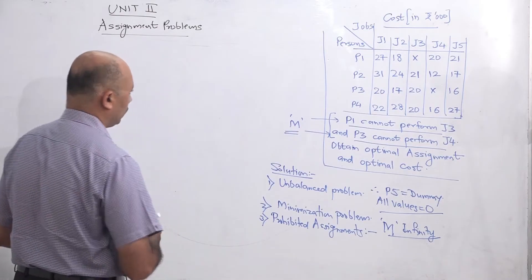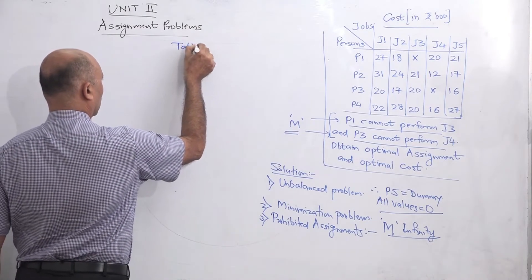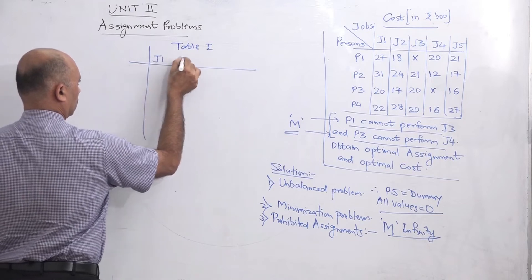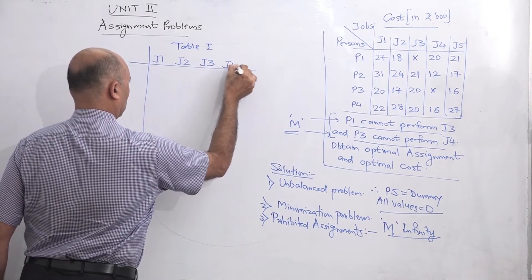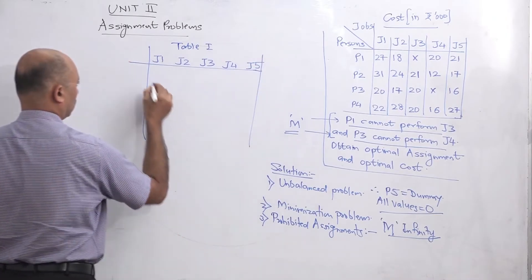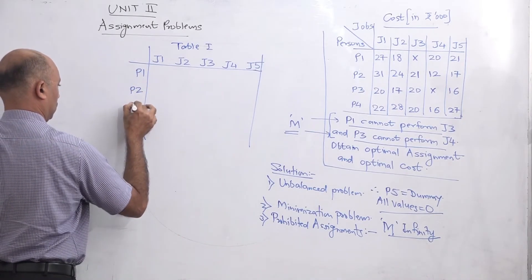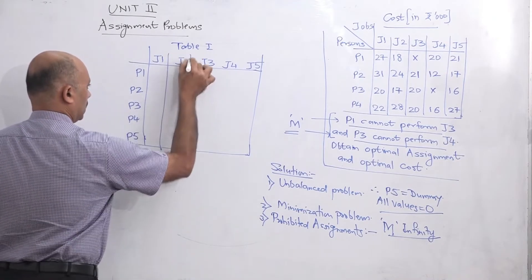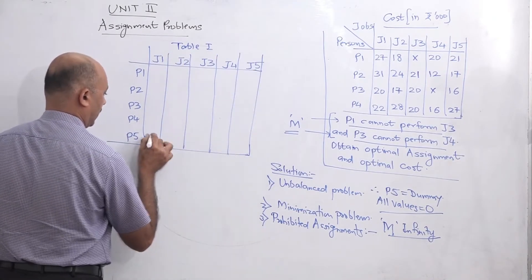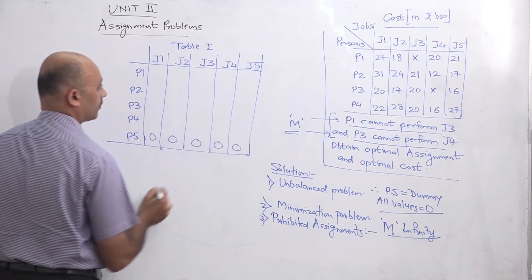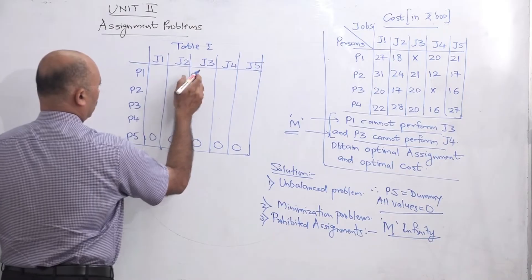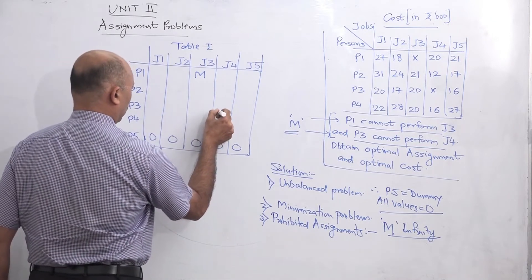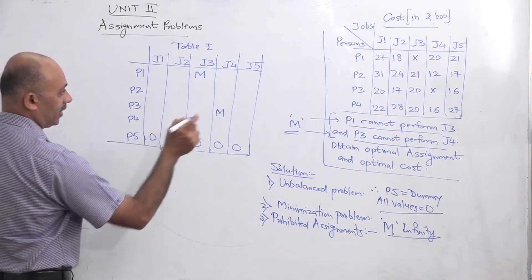So now we will write our first table. We are taking P5 as dummy and all values of P5 will be zero. Then P1J3 we are converting to infinity, that is M. And same way P3J4 is also treated as infinity, that is M. All other values we will write the same.